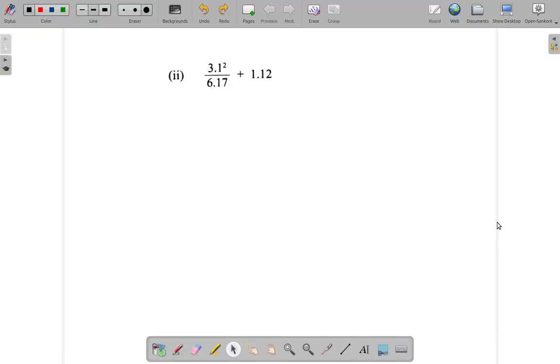Let's look at part 2 of a May 2018 CSEC paper, question 1a, again using a calculator. What we have here is 3.1 squared divided by 6.17 plus 1.12. Now even though you have a division here, we're not going to do the division first. You must not do division first; you must do the square first.